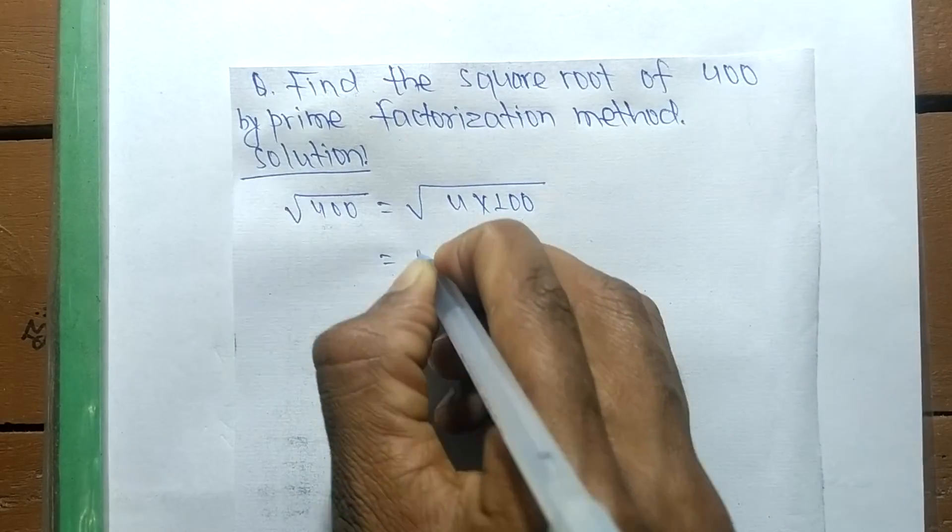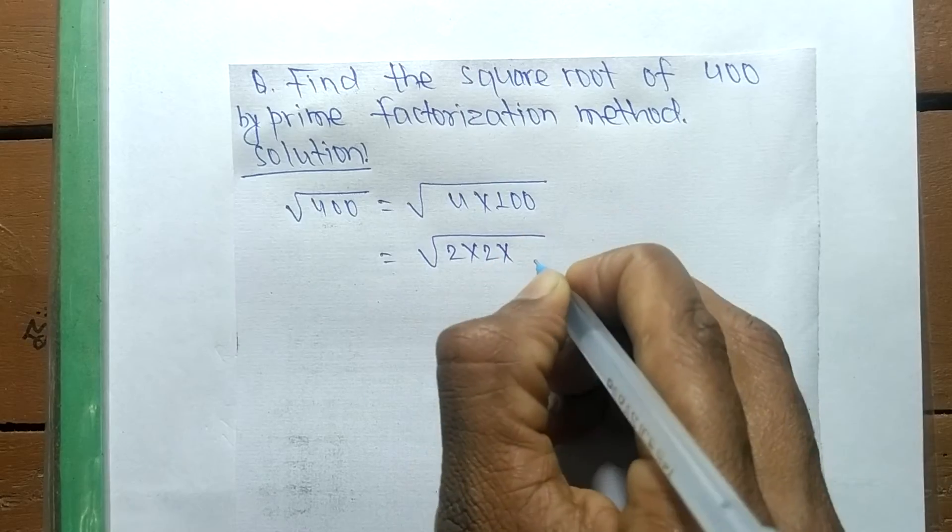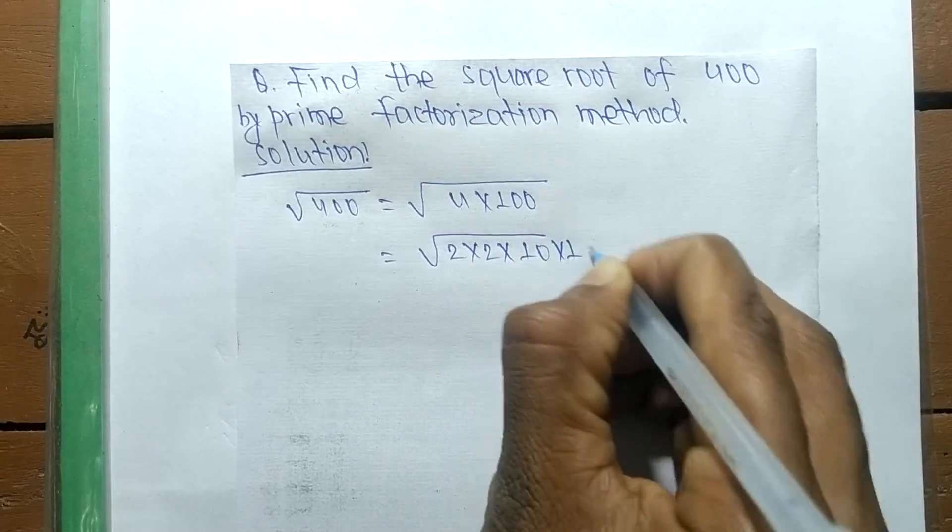So the prime factor of 4 is 2 into 2, and 100 means 10 into 10.